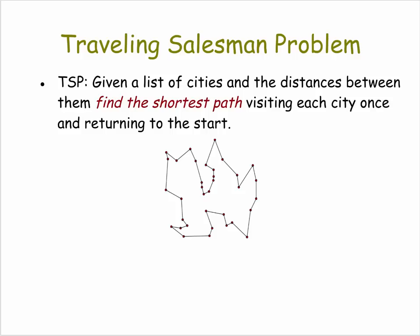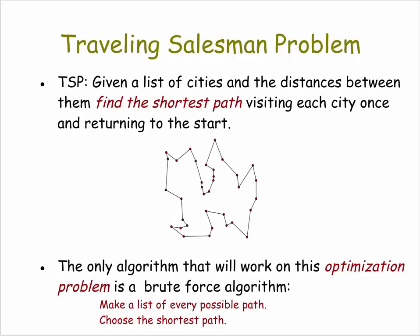One such problem is the traveling salesman problem, or TSP. Given a list of cities and the distances between them, find the shortest path visiting each city once and returning to the start. This is an example of what's called an optimization problem — finding the best possible solution, optimizing the solution.